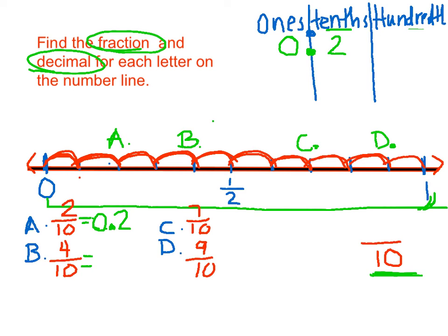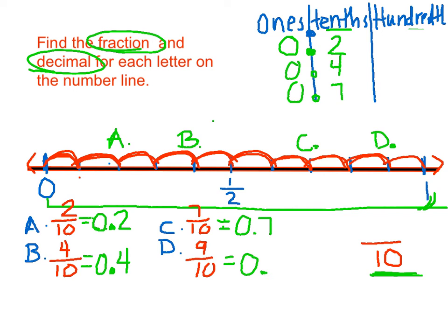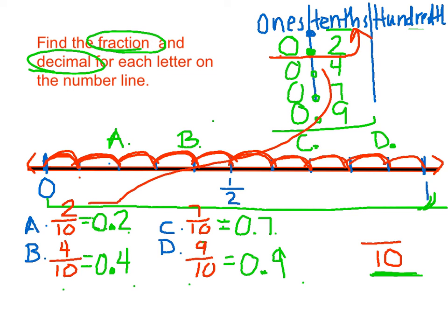Let's go to the next one. This one would be putting a 4 in the tenths place, so I have 0 and 4 tenths. And then C would be 0 and 7 tenths, and D would be 0 and 9 tenths. So that is our answer — we have shown the fraction and the decimal for each of the letters. We can double check by repeating what we're seeing: this would be 0 and 2 tenths, and I better be seeing 2 tenths there. And it matches.